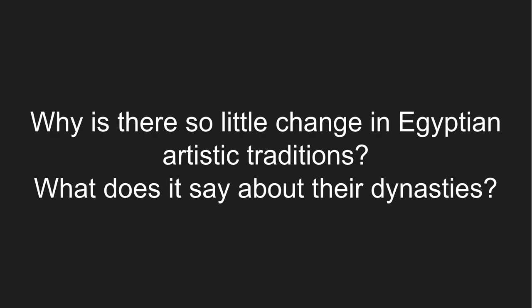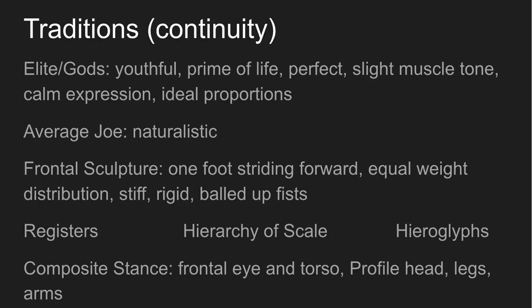Two questions: Why is there so little change in Egyptian artistic traditions, and what does it say about their dynasties? The traditions we have: the elite and gods — pharaohs or any gods — are depicted as youthful, in the prime of their life, perfect, with slight muscle tone. They don't want to look like they're the ones building pyramids, but they still want to look good. Calm expression and ideal proportions — they measured their canon of proportions in fists, with the average man being 18 fists tall. The average person is depicted naturalistically, not idealized.